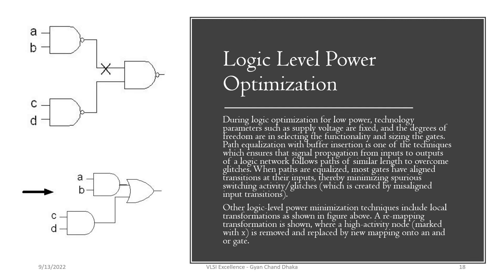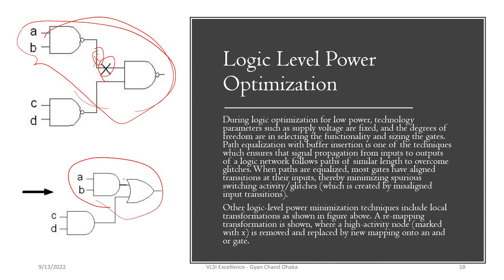The next optimization concept is circuit transformation. If a particular node has high switching activity, we can transform the circuit into an equivalent form where that node becomes a low-activity node. By redesigning the circuit in a different form and calculating the power, the switching activity at the critical node can be reduced without affecting functionality. Carefully transforming the circuit from one topology to another — while preserving functionality — can also optimize dynamic power dissipation.